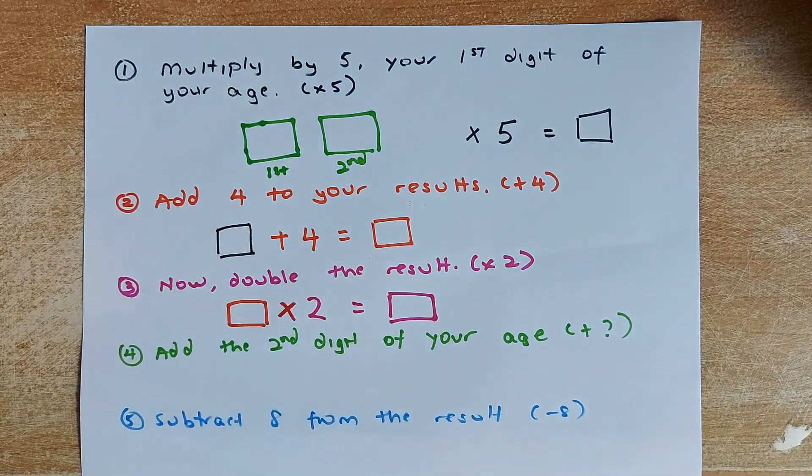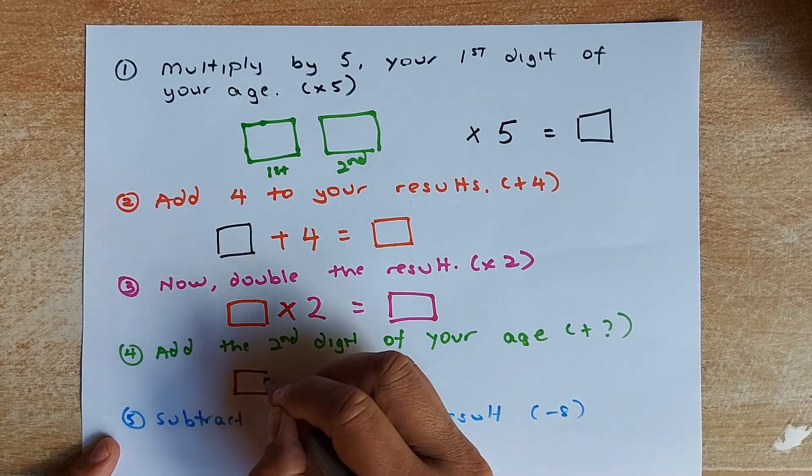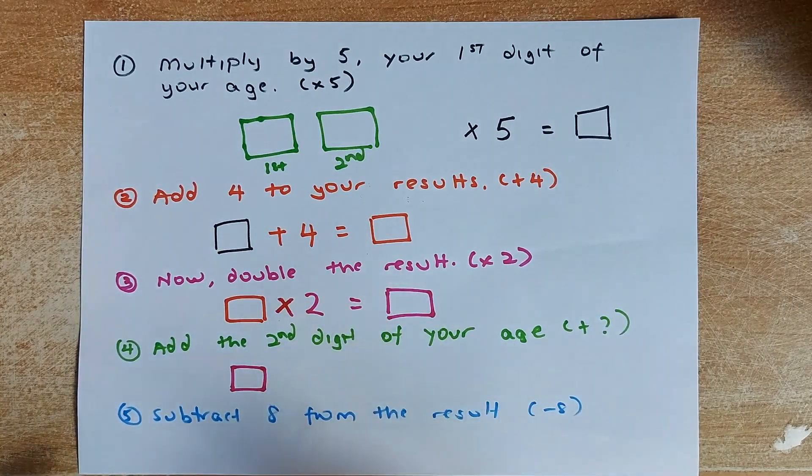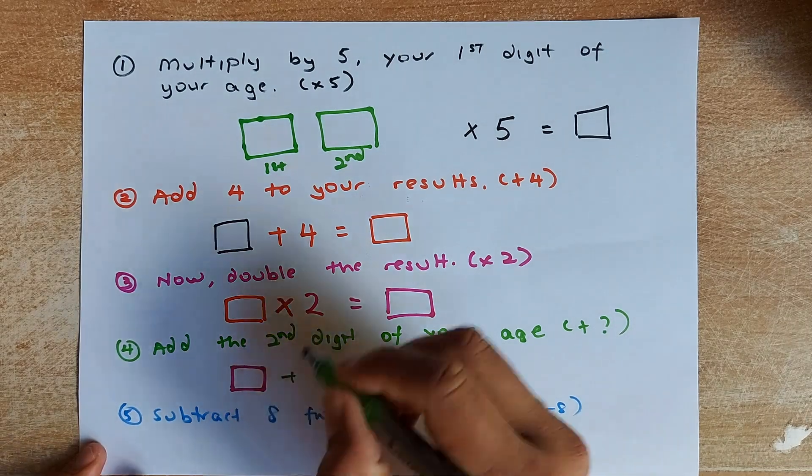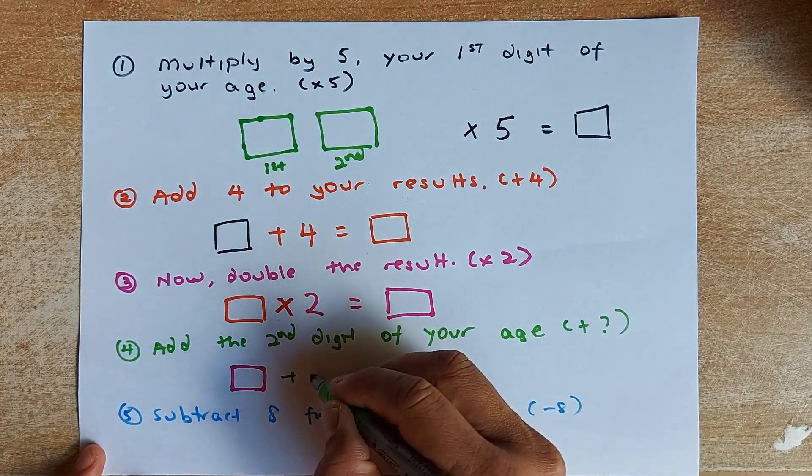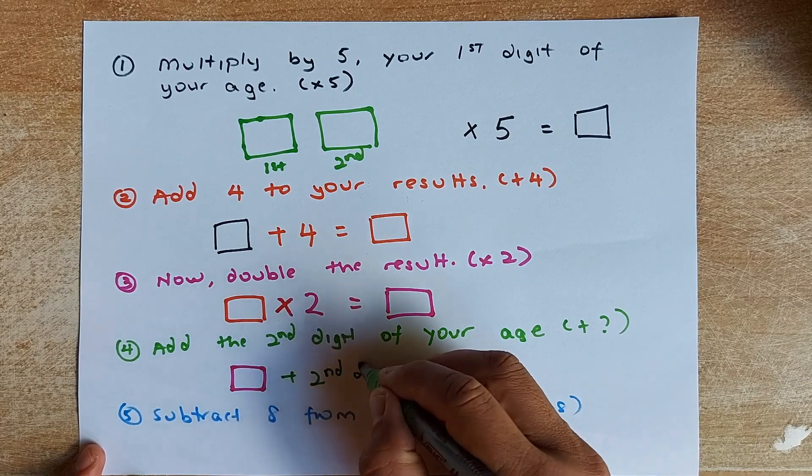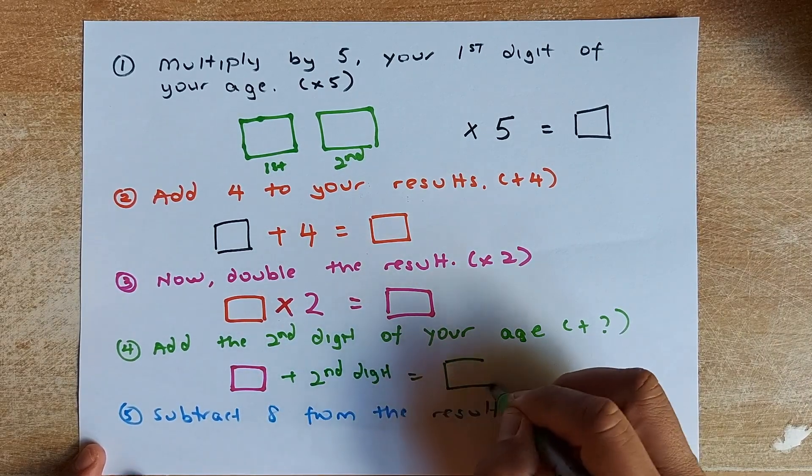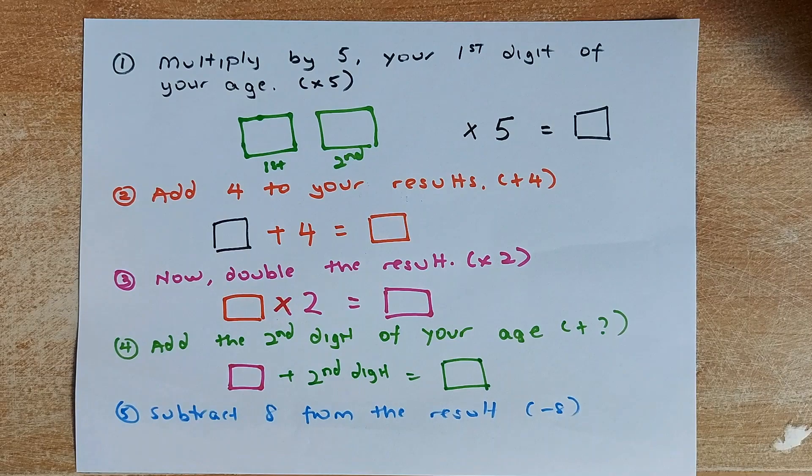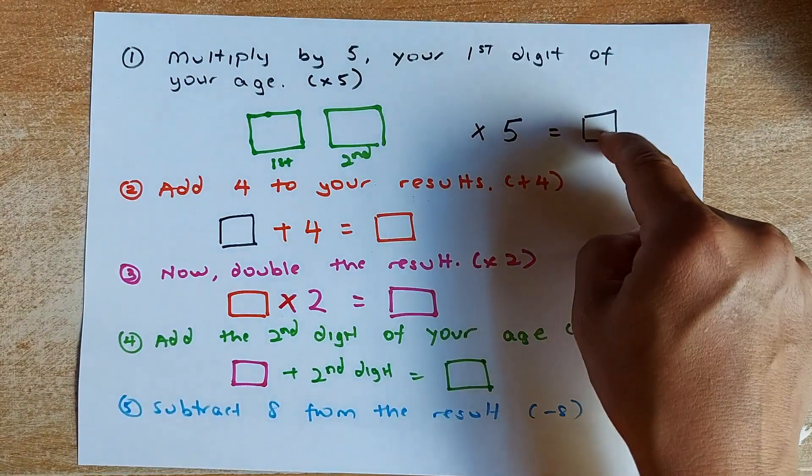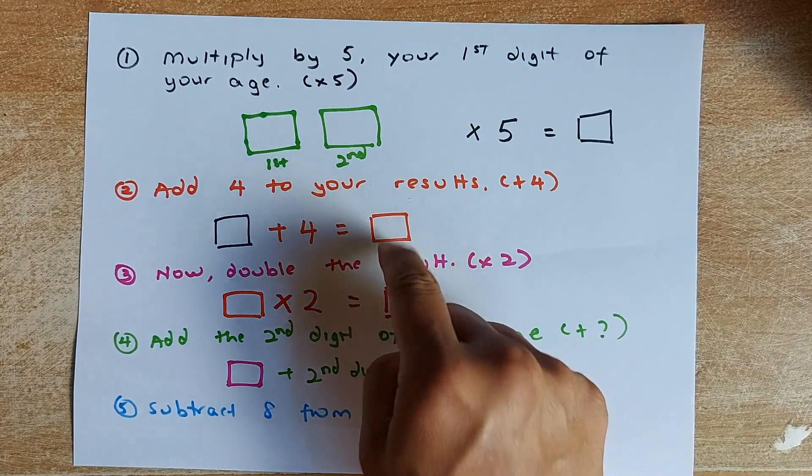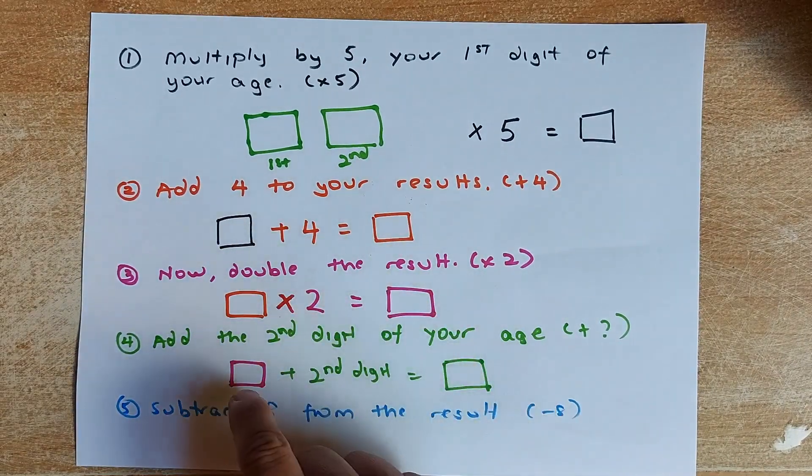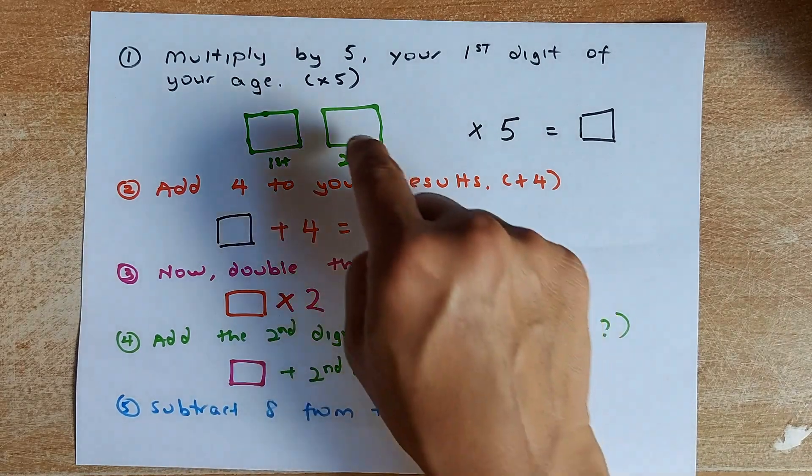Now, you are going to continue the calculation from that pink box. You are going to add the second digit of your age. So you are going to add the second digit. And that will give you the green box. So repeat again. Multiply by 5. First digit multiplied by 5. That answer you plus 4. That answer there you multiply by 2. And that box there you are going to add to the second digit.